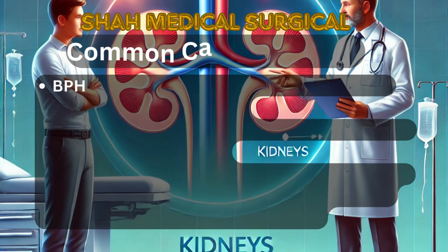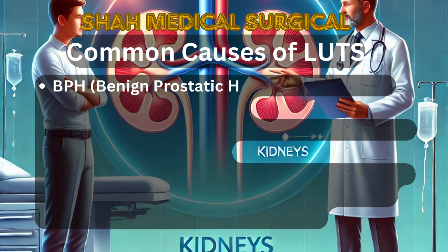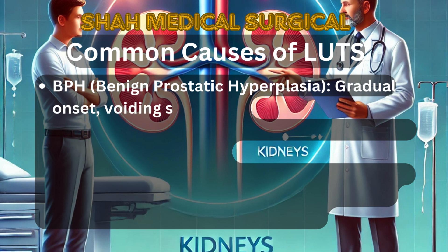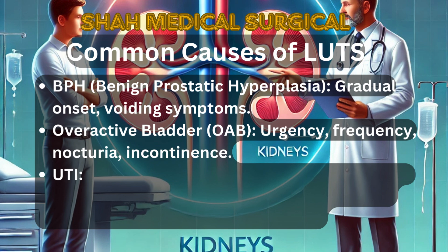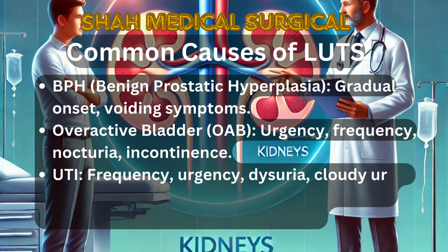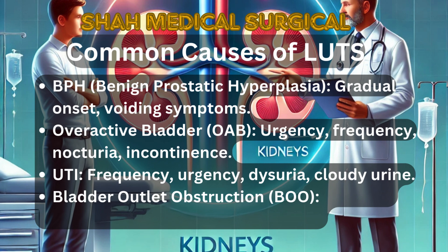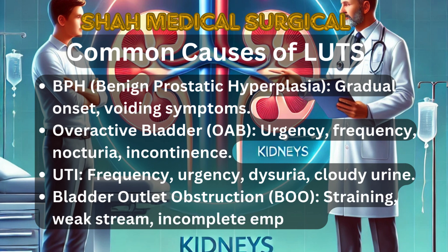Common causes of lower urinary tract symptoms include: BPH (benign prostatic hyperplasia), which has a gradual onset with voiding symptoms; overactive bladder (OAB), which causes urgency, frequency, nocturia, and incontinence; UTI (urinary tract infection), which causes frequency, urgency, dysuria, and cloudy urine; and bladder outlet obstruction (BOO), which results in straining, weak stream, and incomplete emptying.